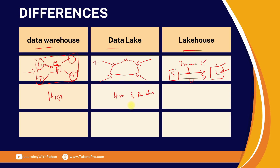A data warehouse is primarily used for historical data and analytical purposes. A data lake is also used for historical and analytical purposes, but it can also help us pull the latest data sets. If you want to look at different versions of data, you can use the lakehouse to look at changes to that particular data. The lakehouse is primarily used for transactional purposes and can serve as input for a data warehouse as well as for operational reporting.